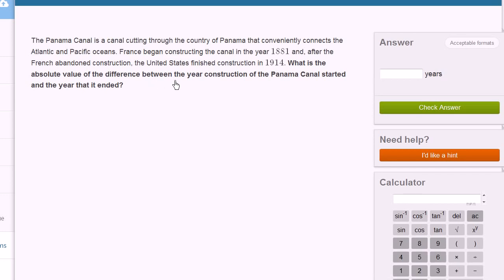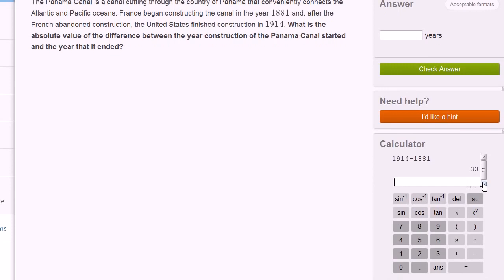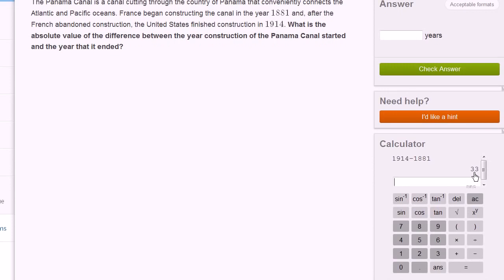Well, there's a couple of ways you could do it. You could take the larger year and subtract the smaller year from it. And we have our calculator here. You could literally say 1914 minus 1881, and you get 33 years. And that's the absolute value of 33. It's just 33.